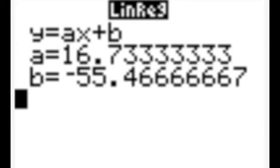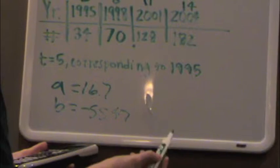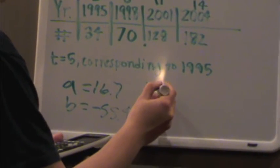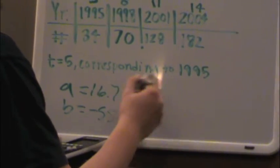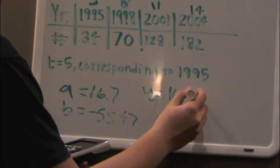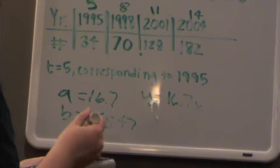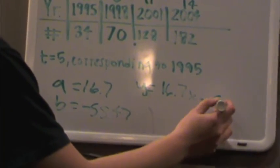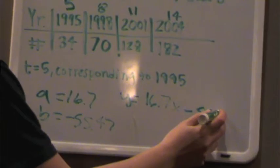And it'll give you, in y equals ax plus b format, that a equals about 16.7, and b should equal negative 55.47. And then you can just plug this into your equation. y equals ax, so 16.7x, plus b, so minus 55.47.